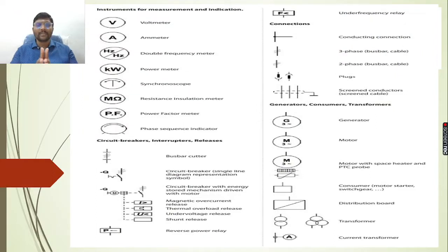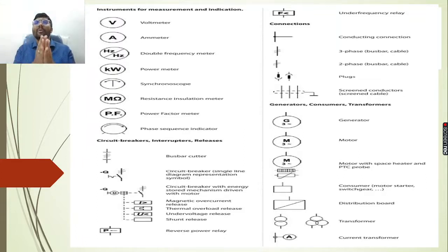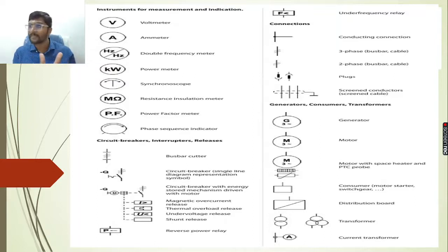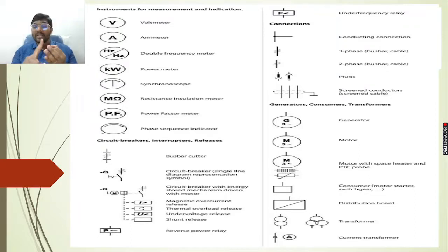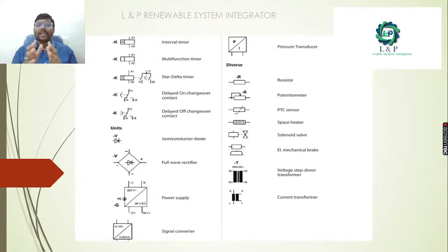As mentioned in our discussions and diagrams, we use many abbreviations, symbols, and short forms. If you have any issues, please refer to the reference part provided across all 22 videos. This part covers symbols and abbreviations for instruments for measurement and indication, circuit breakers, interruptors, releasers, connections, generators, transformers, fuses, protection and monitoring relays, switchers, relays, contactors, and other units.